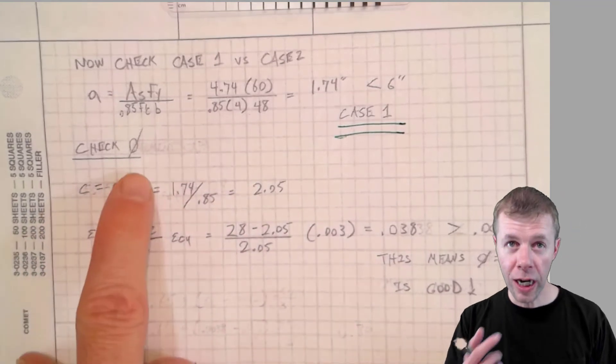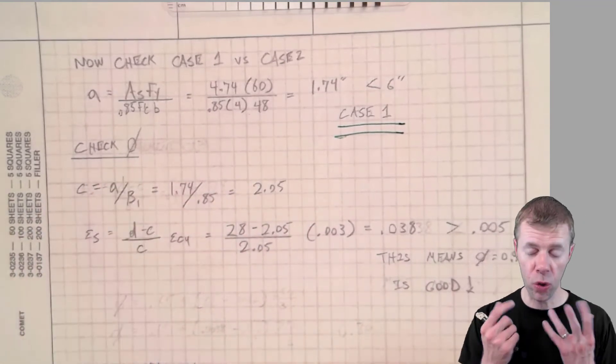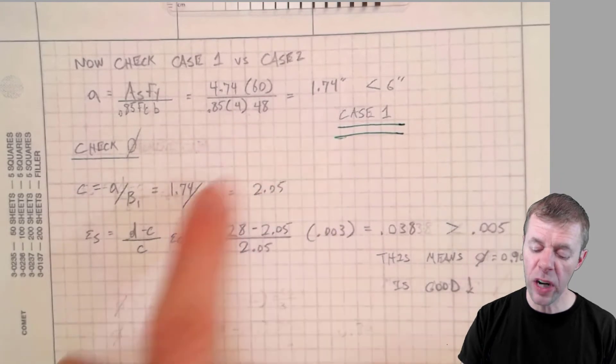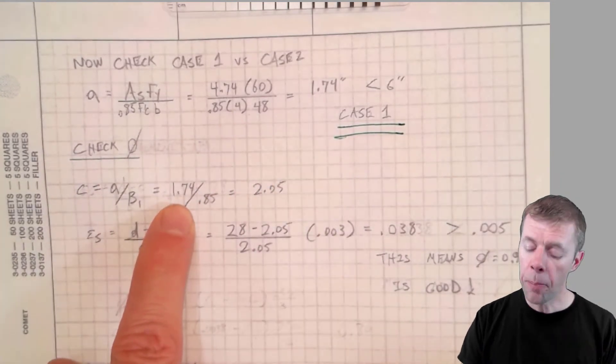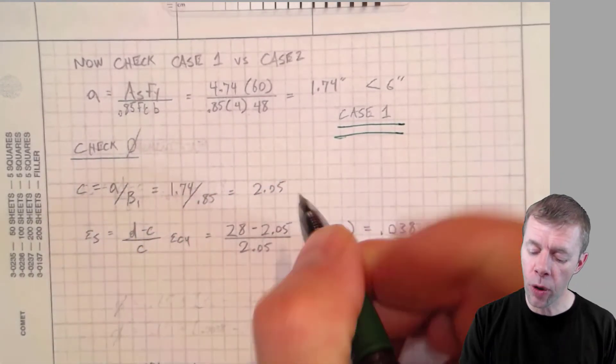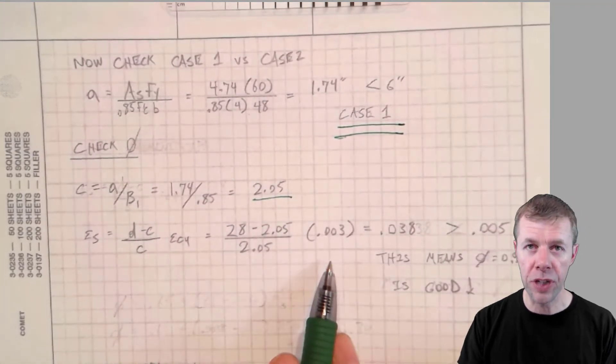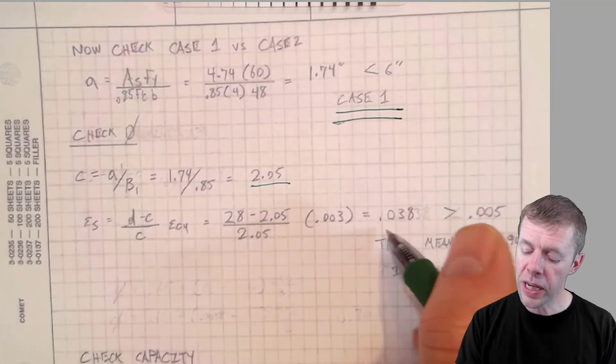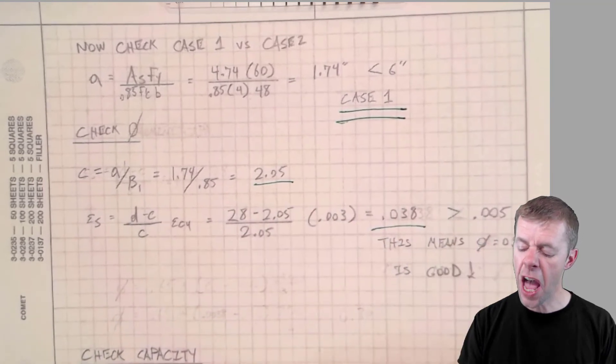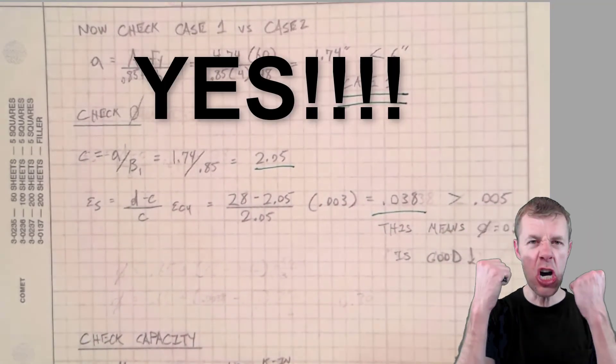Your fee now. We're gonna check and make sure our fee check was correct. So this 1.74 is correct. Yes! Our beta 1.85. So I get 2.05. I plug into our favorite equation to find the strain in our steel. And I get 0.038 which is greater than 0.005. This means again fee is 0.9. Yes!